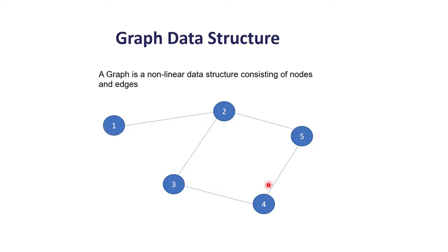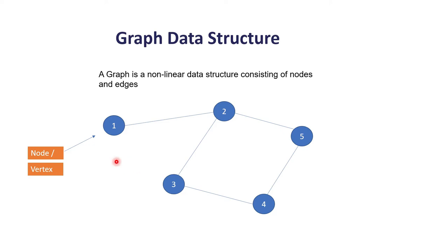These nodes — one, two, three, four, five — are connected by some line called an edge. So a graph is a nonlinear data structure consisting of nodes and edges. These points like one, two, three are known as a node or vertex, which is another term for node, and they are connected by some line or relation known as an edge. So a graph is a combination of node and edge.